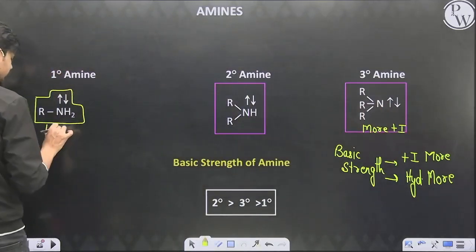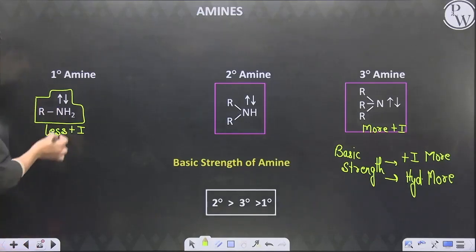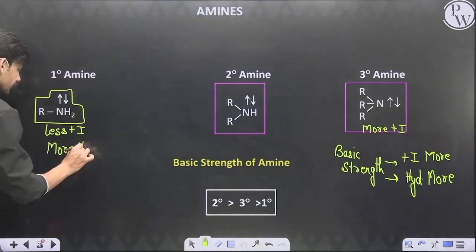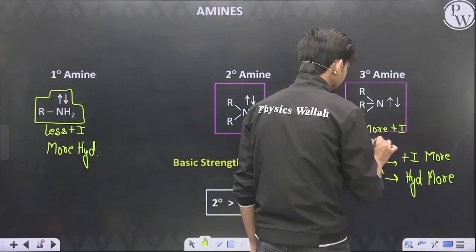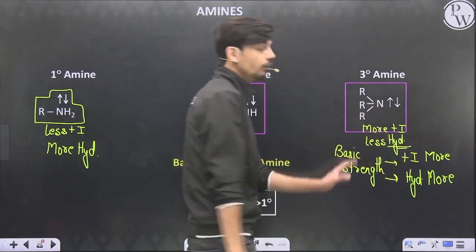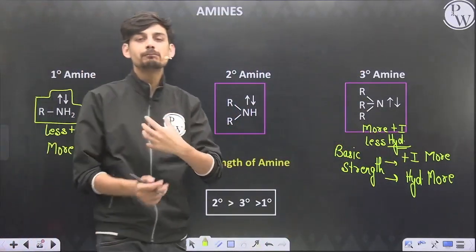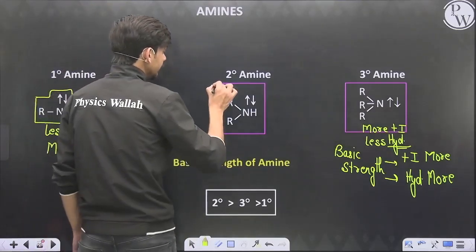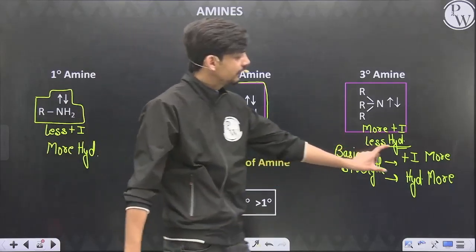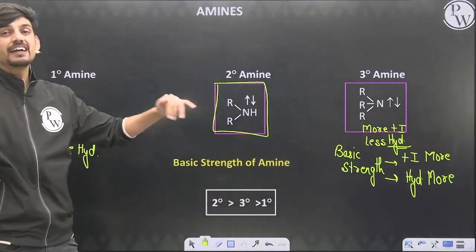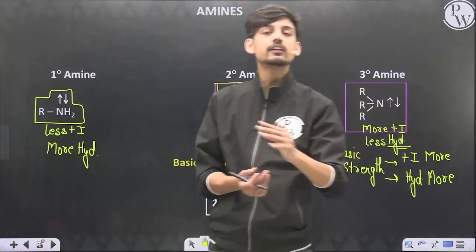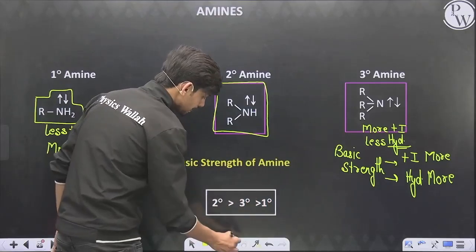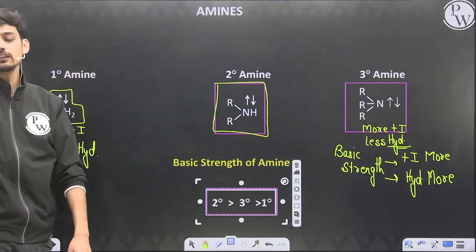The basic strength depends on the degree and the extent of hydrogen bonding. More +I effect means greater basic strength; greater hydration also increases basic strength. Three alkyl groups give more +I effect, but there are fewer hydrogens available for hydration. Primary amines have less +I effect but more hydrogens and greater hydration. Since both primary and tertiary amines have one factor supporting and one opposing their basic strength, the secondary amine, having an appropriate balance of both inductive effect and hydration, becomes exceptionally more basic. The order for basic strength is: secondary > tertiary > primary.